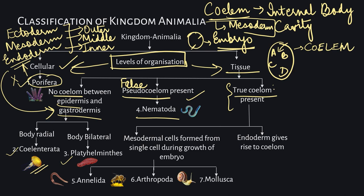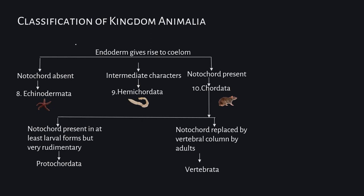In Annelida, Arthropoda, and Mollusca, the mesodermal layers form from a single cell during growth of the embryo. In the other category — Echinodermata, Hemichordata, and Chordata — the endoderm gives rise to the coelum rather than the mesoderm. The eighth, ninth, and tenth categories are Echinodermata, Hemichordata, and Chordata respectively.